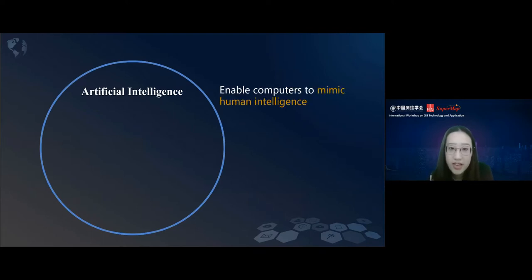When we talk about AI, artificial intelligence can enable computers to mimic human intelligence, like they can make computers perform tasks that usually require the human brain.